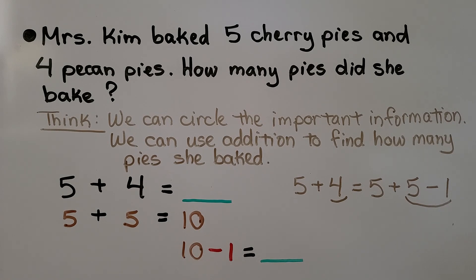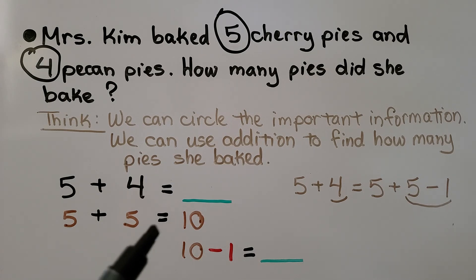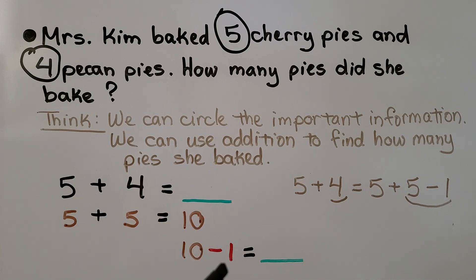Word problem: Mrs. Kim baked 5 cherry pies and 4 pecan pies. How many pies did she bake? We circle the important information: 5 cherry pies and 4 pecan pies. We use addition: 5 plus 4. We can use a doubles fact to help — 5 plus 5 is 10, and that's one more than 5 plus 4, so we do 10 minus 1, which is 9. So 5 plus 4 equals 9. We could also use 4 plus 4 is 8, plus 1 more.